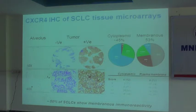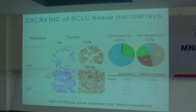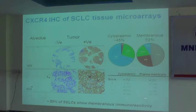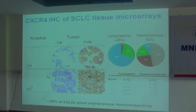To further validate this, we performed IHC on tumor samples to characterize CXCR4 expression. We looked at CXCR4 expression within the tumors and found that about 50% of the tumors actually have membrane expression of CXCR4. That means at least 50% of the tumors can potentially be targeted as a possibility for improving therapy.